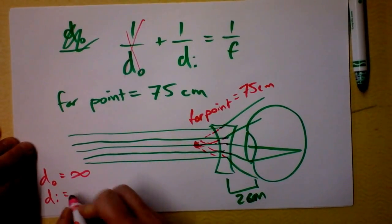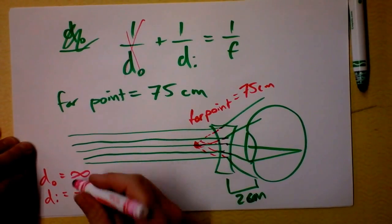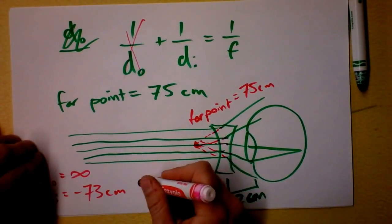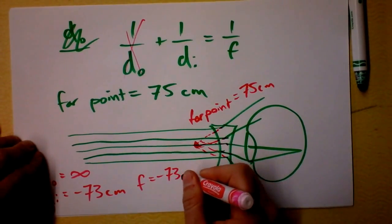So let's figure out the distance of the object is infinity, so we don't have to worry about this term right here. The distance of the image? Well, the distance of the image from the lens, remember, is negative 73 centimeters. So I suppose the focal length of that lens also has to be negative 73 centimeters.